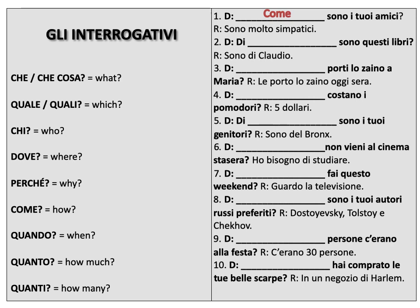Numero due. Di blank sono questi libri — sono di Claudio. Of blank are these books, they are Claudio's. Remember that di means 'of,' so this means the books belong to Claudio. We're asking about a person here, so the answer — there's a mistake, it needs to be chi, sorry. Di chi sono questi libri? Sono di Claudio.